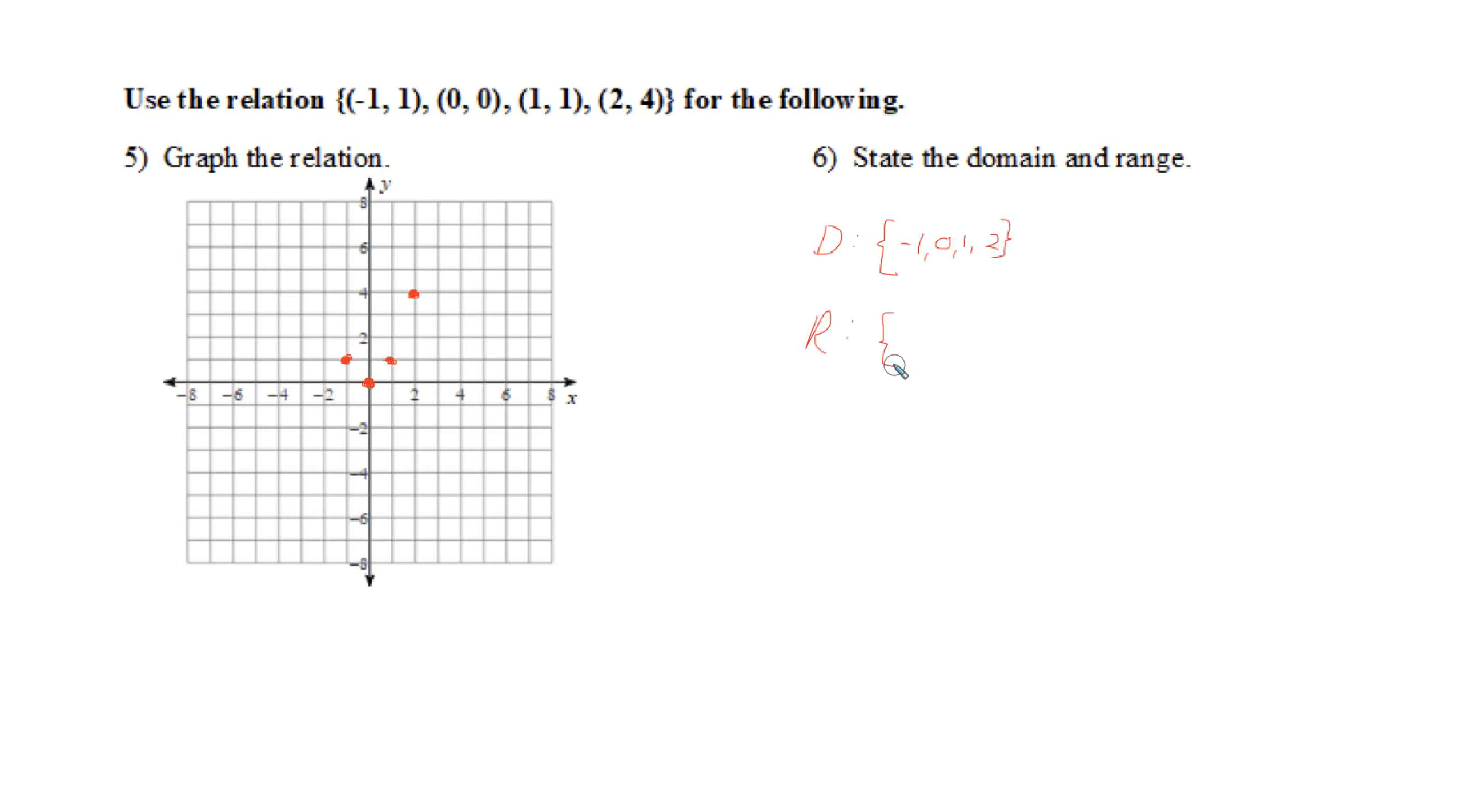The range, that's the y values that appear. So we have one, zero, one, four. We'll put them in numeric order. We would start with zero, and then we would put one. Although one is listed twice or shows up twice in our ordered pairs, we only have to list it once. And then four. So there's the answer to those first six questions.